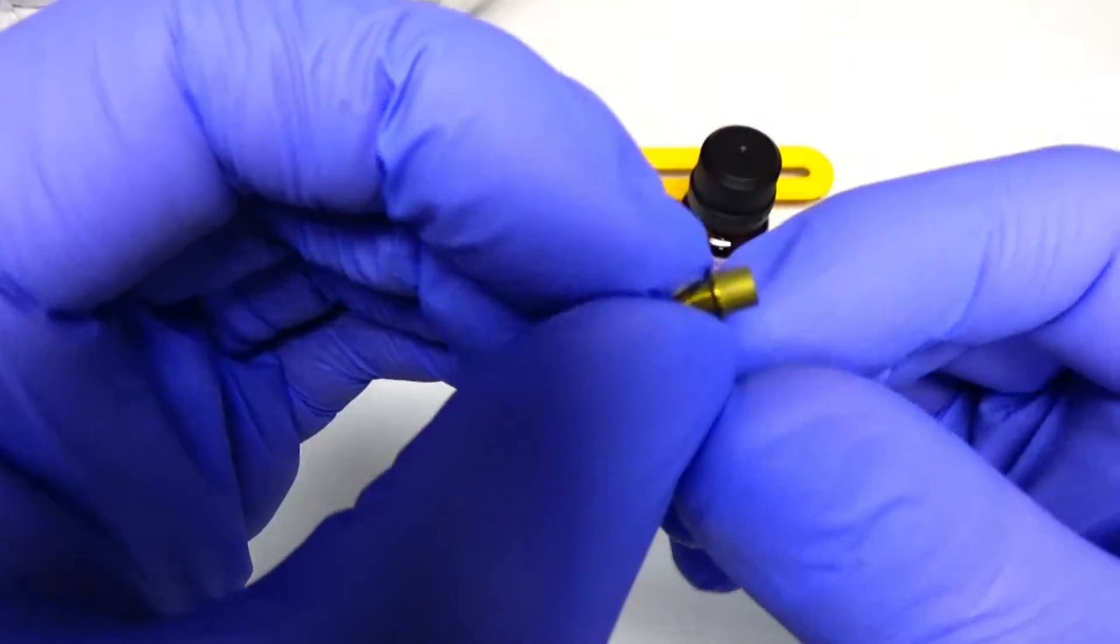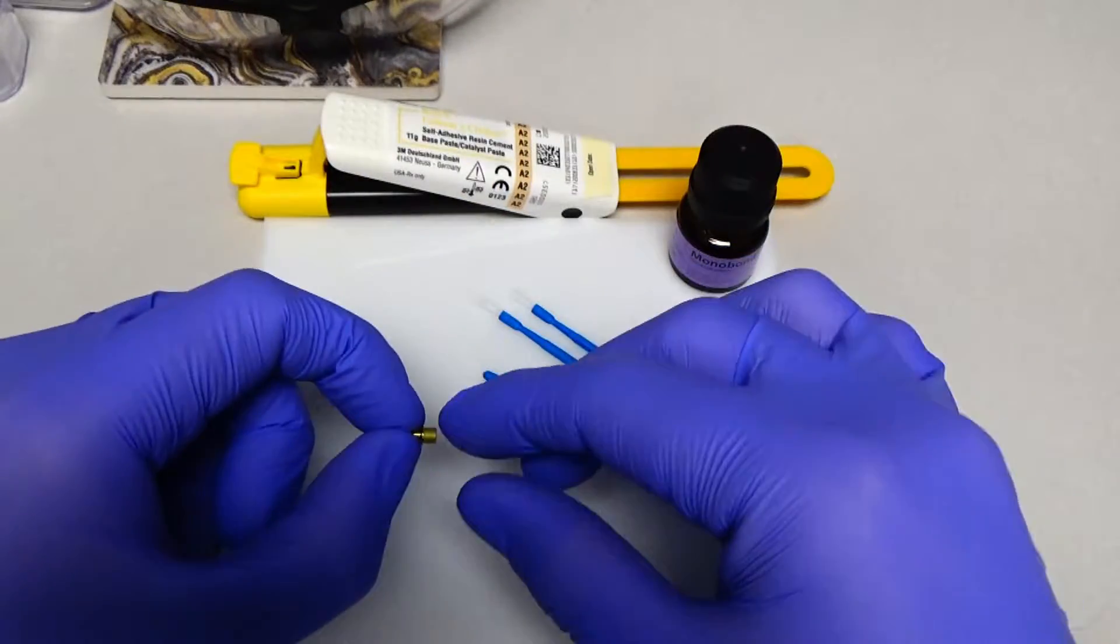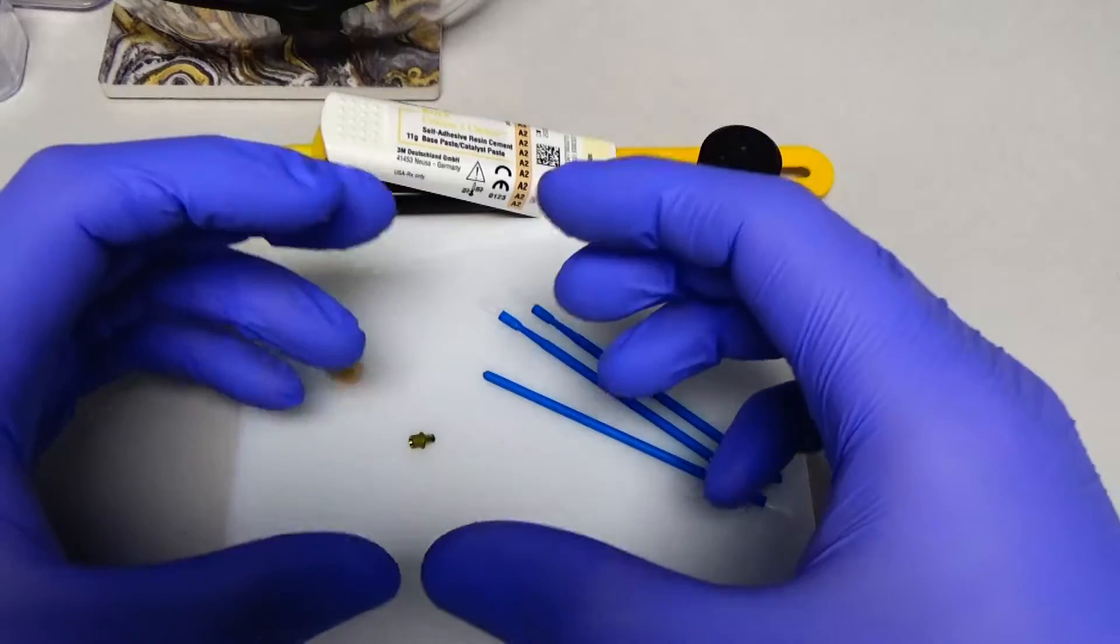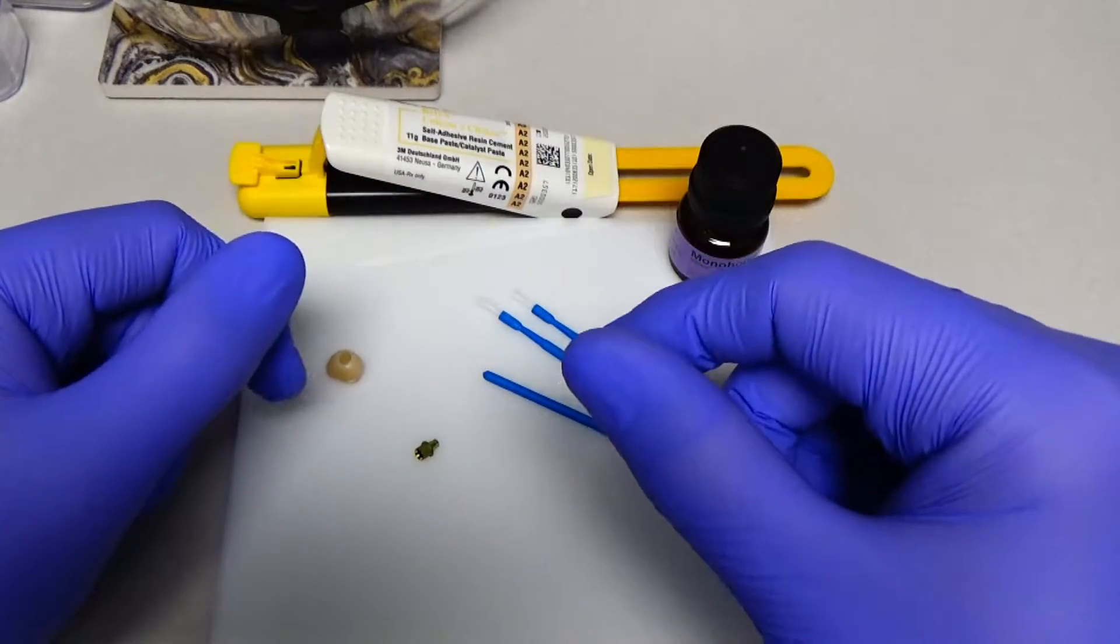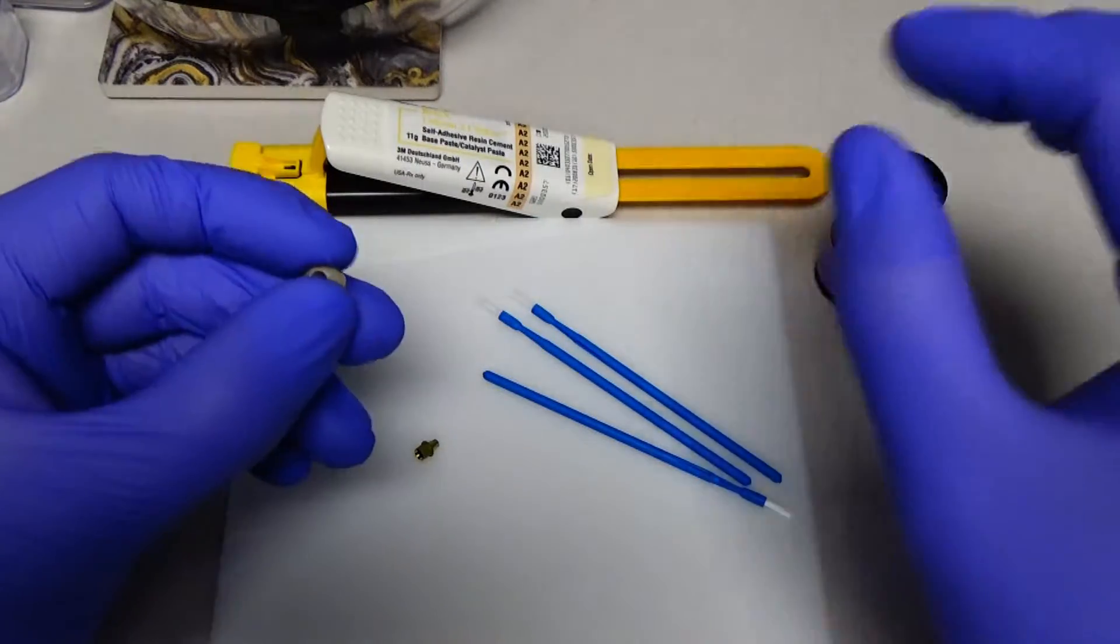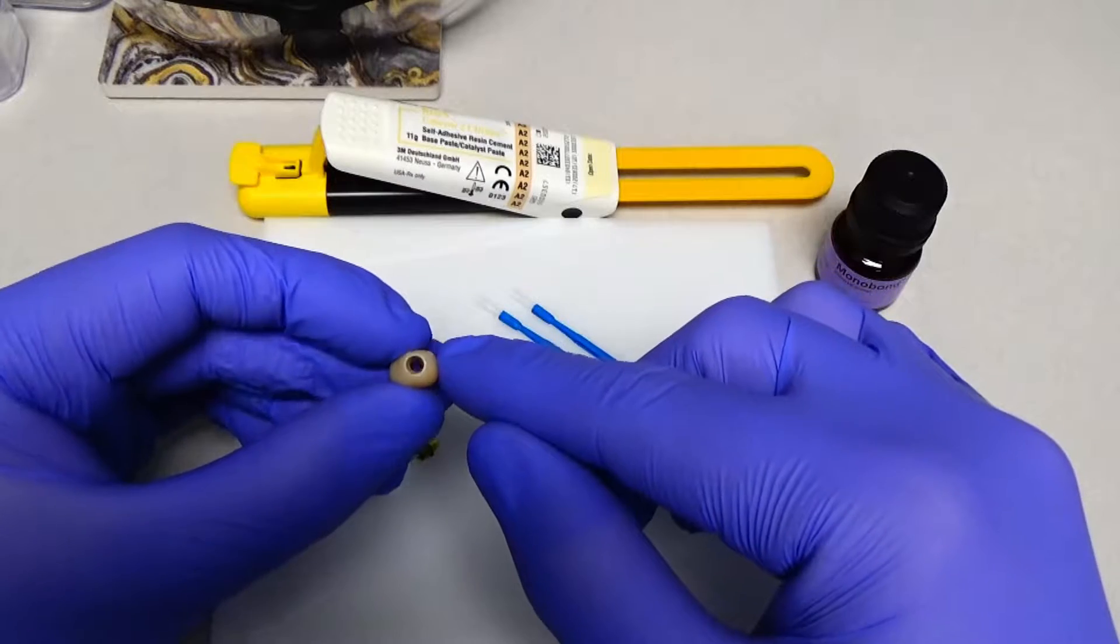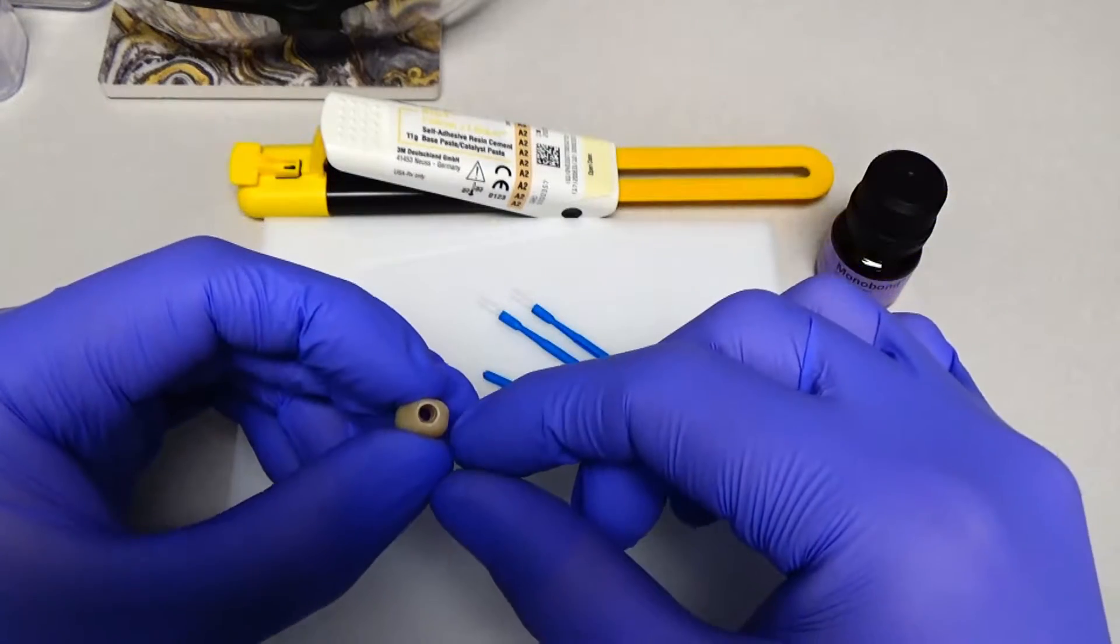And that's an important thing to keep in mind because whenever we want something to stick to something else, we need to think of it as far as etch, prime, and bond. In this case, the zirconia itself cannot be etched with acid, but it can be etched with air abrasion particles.